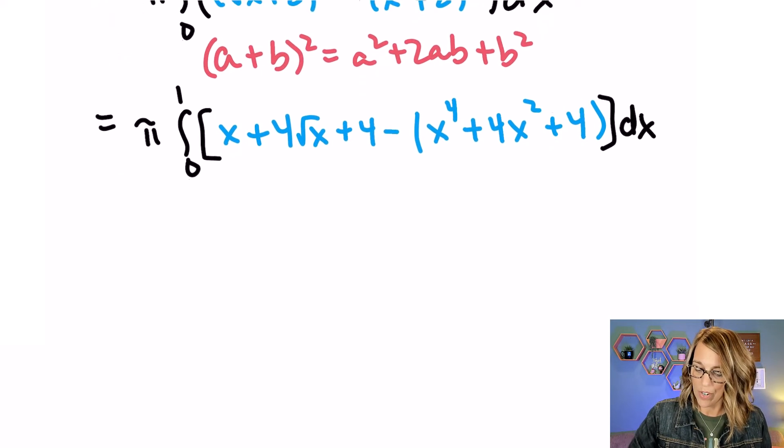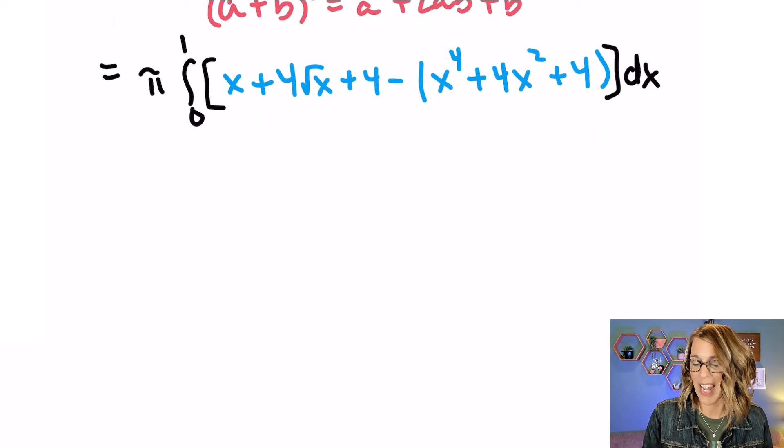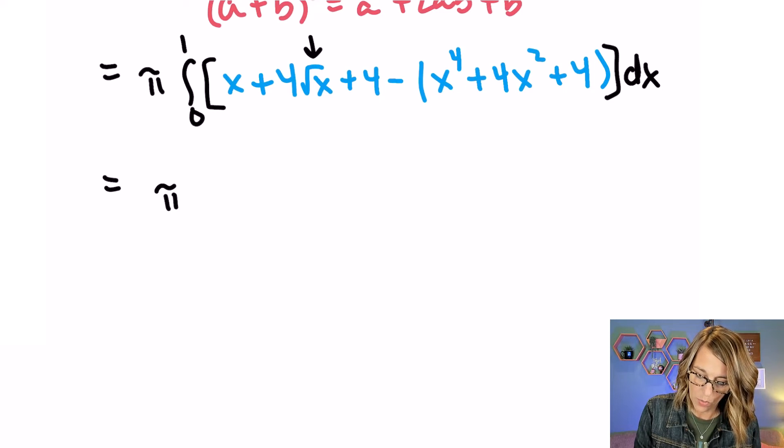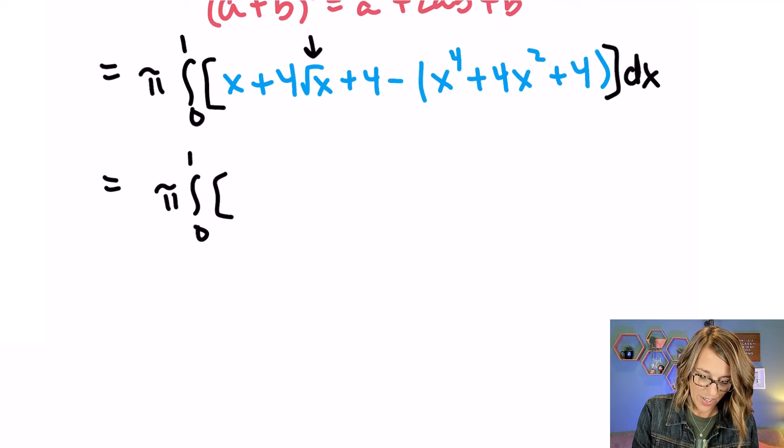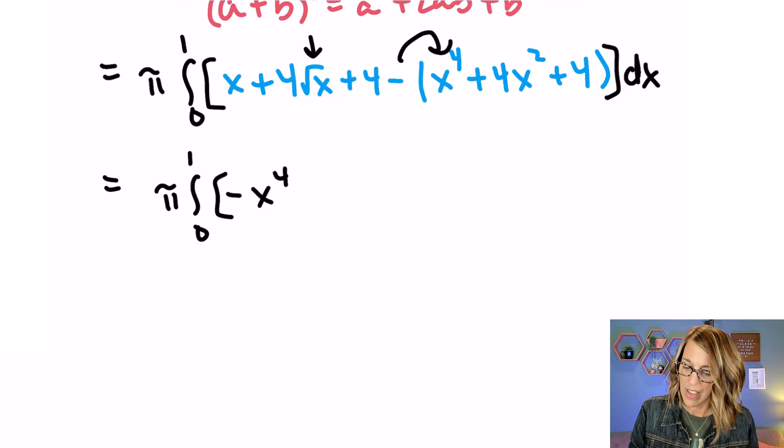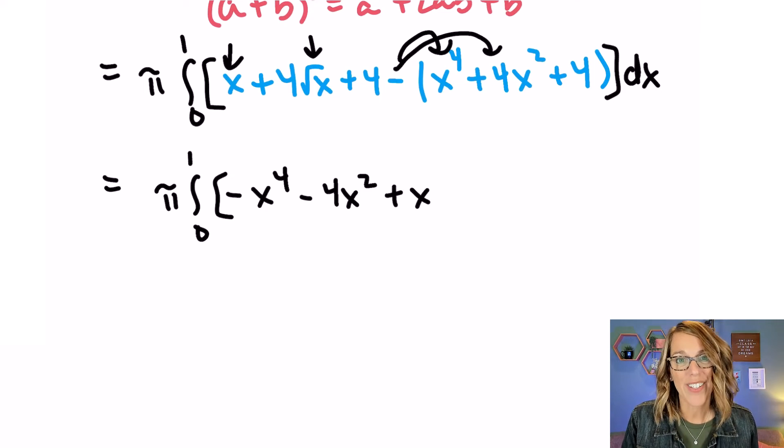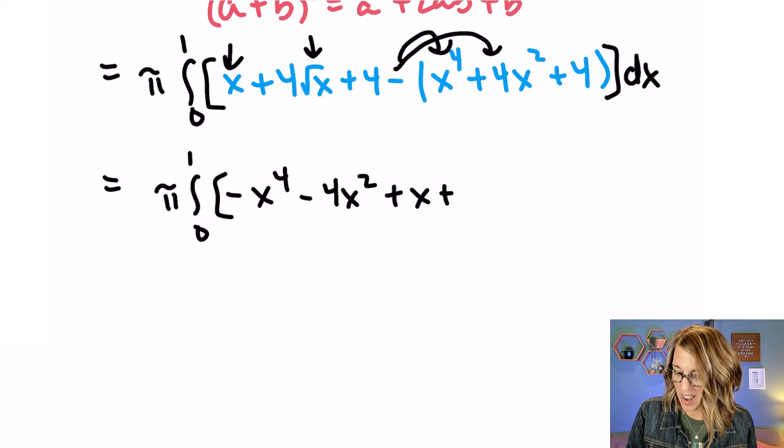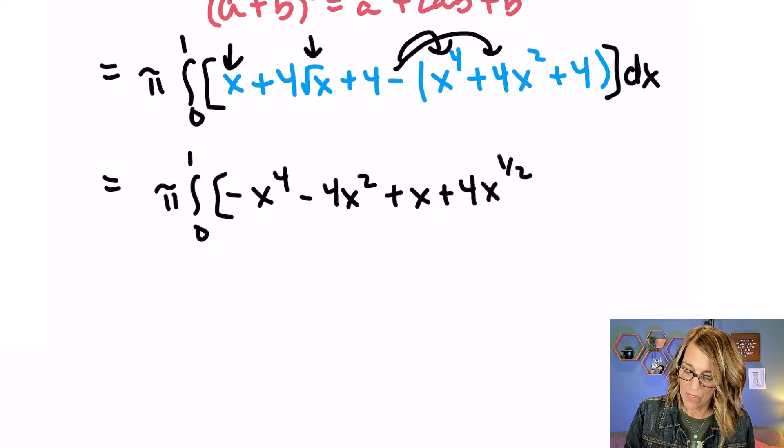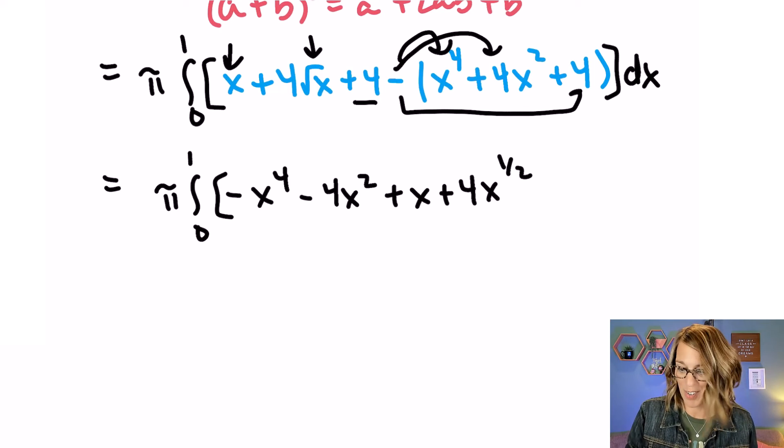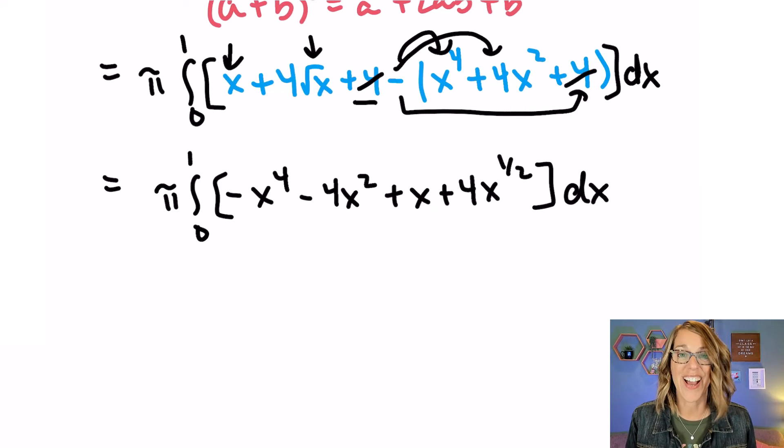Let's get these in order. And I do have a square root of x. So I'm going to take care of that and turn it into a rational power. Okay so 0 to 1. Gathering everything up here I'm going to start with this negative x to the fourth. So minus x to the fourth. x squared is next. So minus 4x squared. And then my x. So plus x. And then that radical x which I'm going to write as plus 4x to the 1 half power. And then I've got my 4 and minus 4. Those just go away. This is all dx.